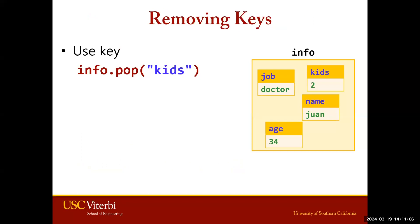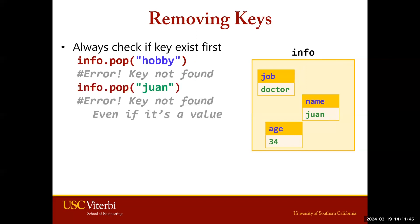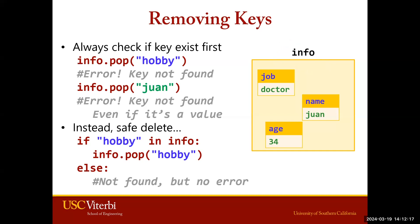To remove a key-value pair, use the pop method. You call your dictionary with .pop() and in the parentheses provide the key. In this example, we'll remove the key-value pair kids-2 by providing the key kids. It's important to make sure the key exists before using pop — if we try to remove using hobby as a key, that will give an error because hobby isn't a key within our info dictionary. The same error occurs if you provide a value instead of a key. A safe approach is to check first: if hobby in info, and if true, then pop it; if false, we don't try to remove something that doesn't exist.